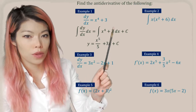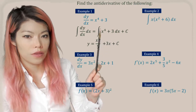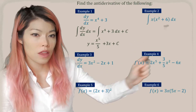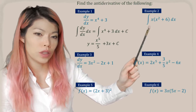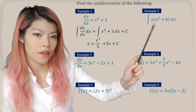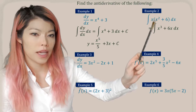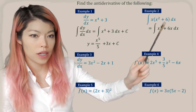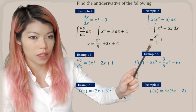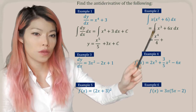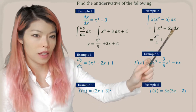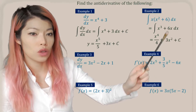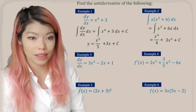Recap the notation: we put the anti-derivative symbol, and that becomes the result without that symbol anymore. Example 2: to find the anti-derivative, but first we have to expand. Expanding, we obtain x times x squared is x cubed, and then x times 6 is 6x. Now we're ready to anti-derive: x cubed, 3 plus 1 is 4, divided by 4. Then this is x to the 1: 1 plus 1 is 2, divided by 2. 6 divided by 2 is 3. Don't forget the plus c.